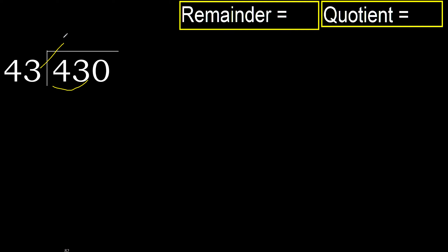43 multiplied by which number is nearest to 43, but not greater? 43 multiplied by 2 is greater. Multiplied by 1 is 43, which is not greater.